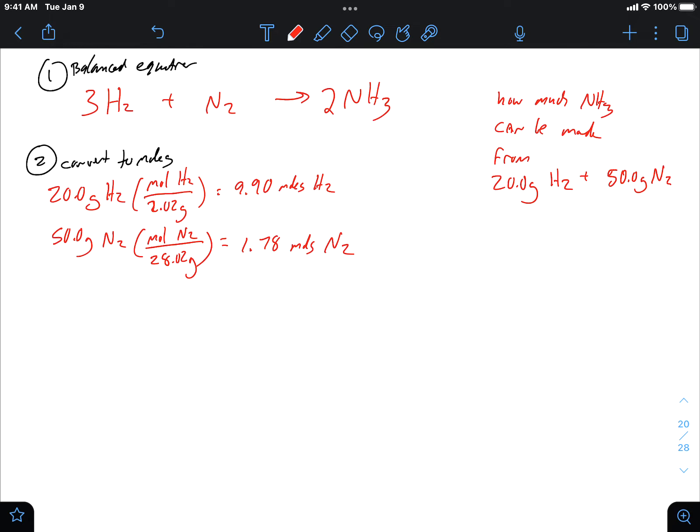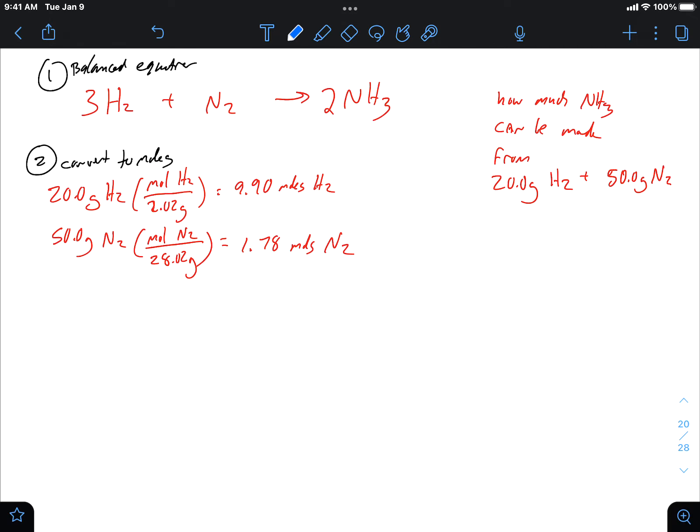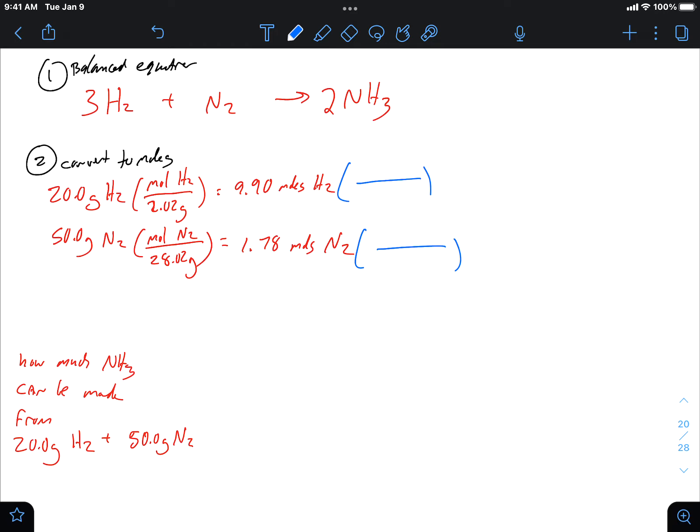To answer the question how much ammonia can be made, right now I have my reactants in moles, and so I need to convert them both into ammonia to answer the question. So here's where the mole ratio comes in. I'm going to move this question out of the way just so I have more space to write.